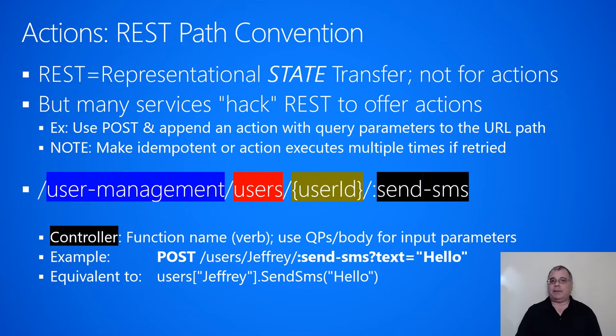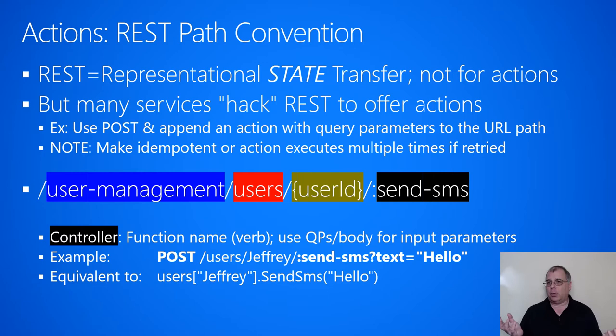This can be easy for certain things. For example, if I want to go and get a thumbnail for some photo image, I can do a POST, include the full image in the body, and the response returns back a thumbnail image. If I execute that same request twice, I'm uploading the same photo and getting back the same thumbnail, so it's just naturally idempotent.